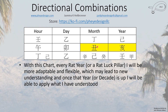This is my actual chart. I still have two of those branches, but my hour is different. This means that every rat year or rat luck pillar, I will be more adaptable and flexible — it might lead to new understanding. Once that decade or year is up, I would be able to apply what I've understood. So in some sense, it could be better to have it only as a year or luck pillar rather than permanently.